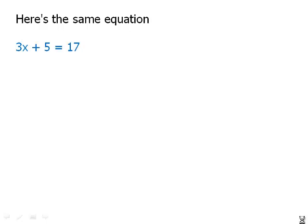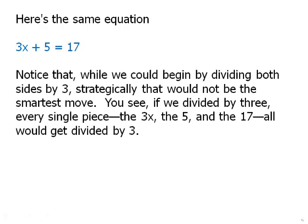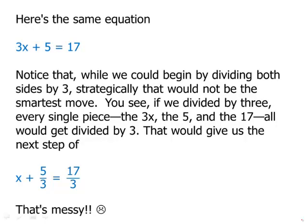Now, here's the same equation. Notice that we could begin by dividing both sides by 3. That would be mathematically allowed. Strategically, that would not be the smartest move. You see, if we divide it by 3, every single piece, the 3x, the 5, and the 17, all would get divided by 3. And so we'd wind up with this fraction equation. That would not be the best thing.